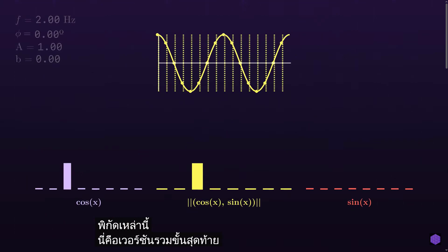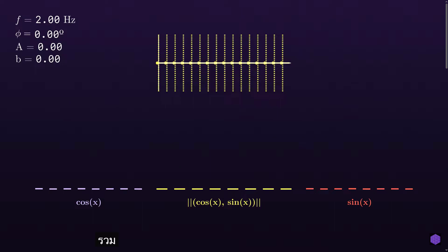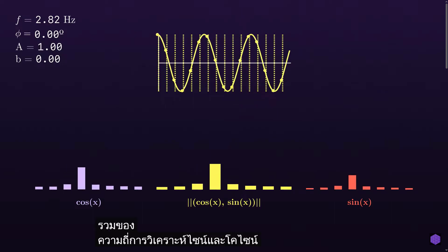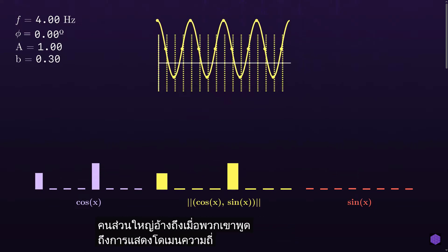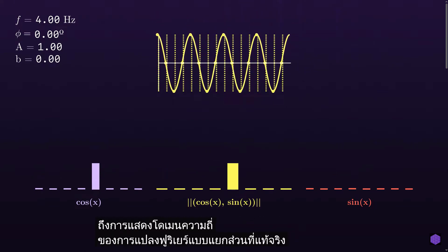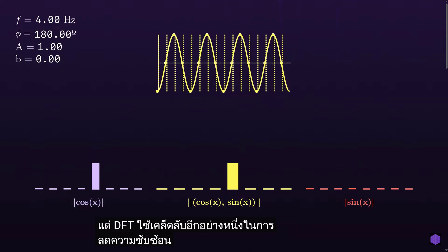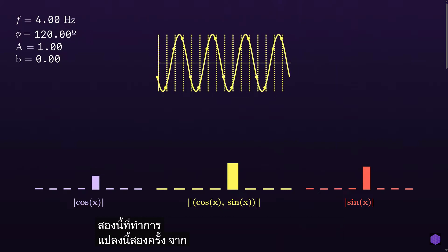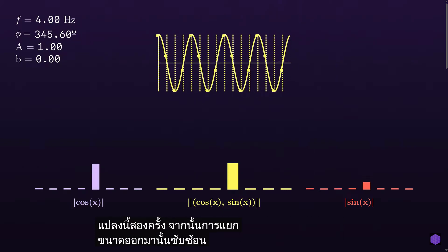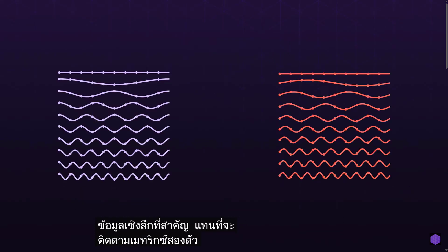Here's the final combined version of the transform applied to our previous test cases. This combined version of sine and cosine analysis frequencies is what most people refer to when they talk about frequency domain representations of the true discrete Fourier transform. But the DFT uses one more trick to simplify things — generating two matrices, performing the transformation twice, and then extracting the magnitude is a bit convoluted. The key insight is that instead of keeping track of two matrices, we can jointly represent the two coordinates as sampled points from a unit circle into a single matrix.